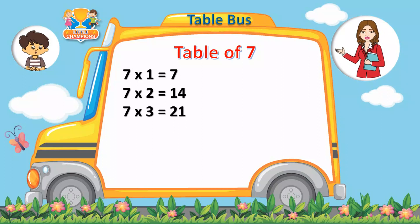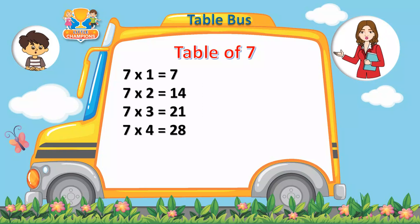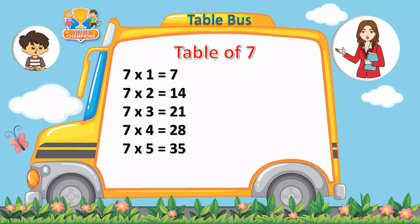7 3s are 21. 7 3s are 21. 7 4s are 28. 7 4s are 28. 7 5s are 35. 7 5s are 35. 7 6s are 42. 7 6s are 42.